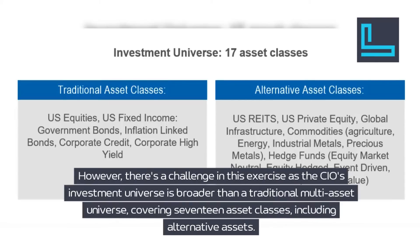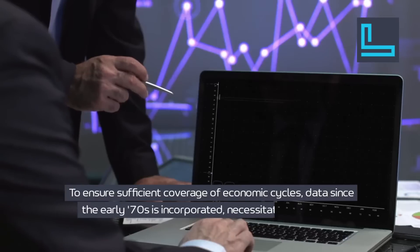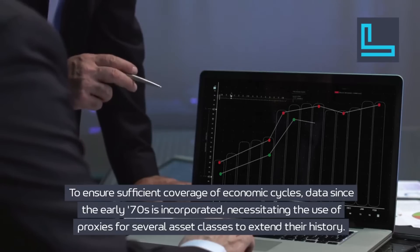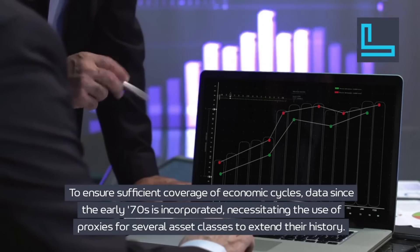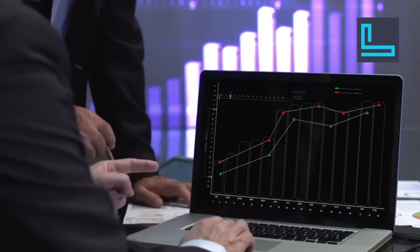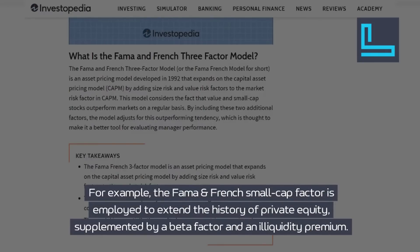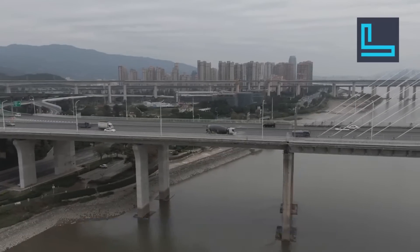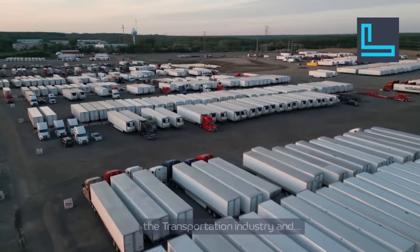There's a challenge in this exercise as the CIO's investment universe is broader than a traditional multi-asset universe, covering 17 asset classes including alternative assets. To ensure sufficient coverage of economic cycles, data since the early 70s is incorporated, necessitating the use of proxies for several asset classes. For example, the Fama-French small cap factor is employed to extend the history of private equity, supplemented by a beta factor and an illiquidity premium. Infrastructure is proxied by a combination of the transportation industry and the utility sector.